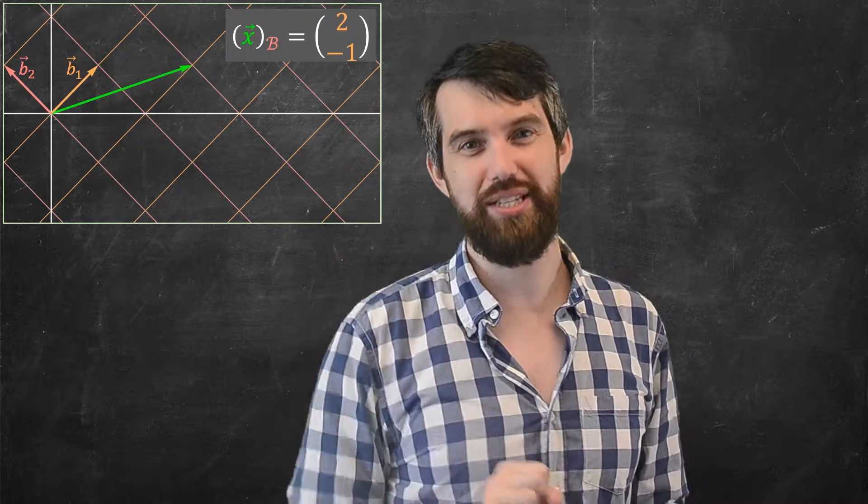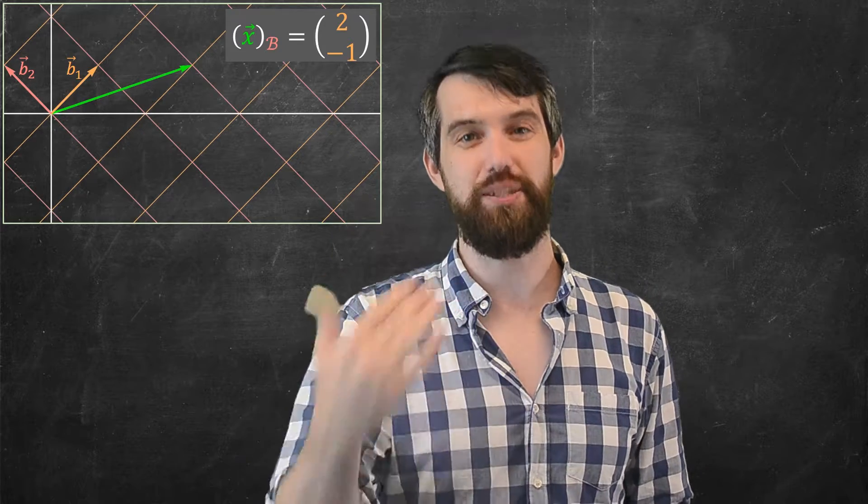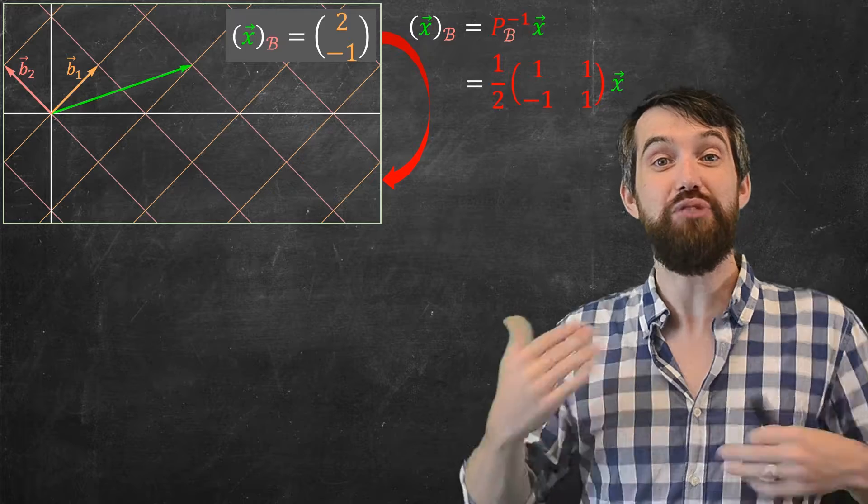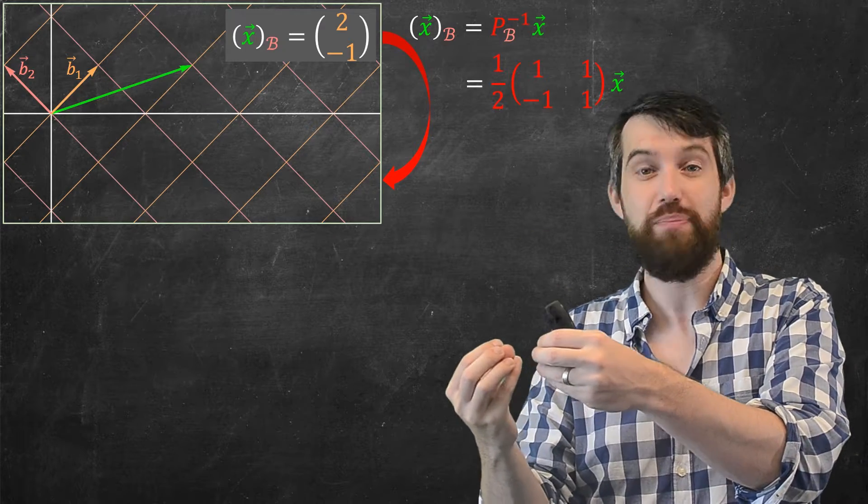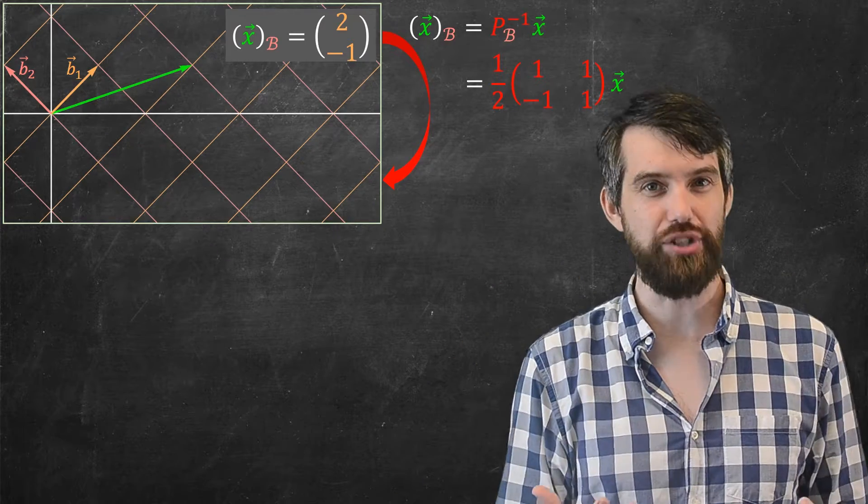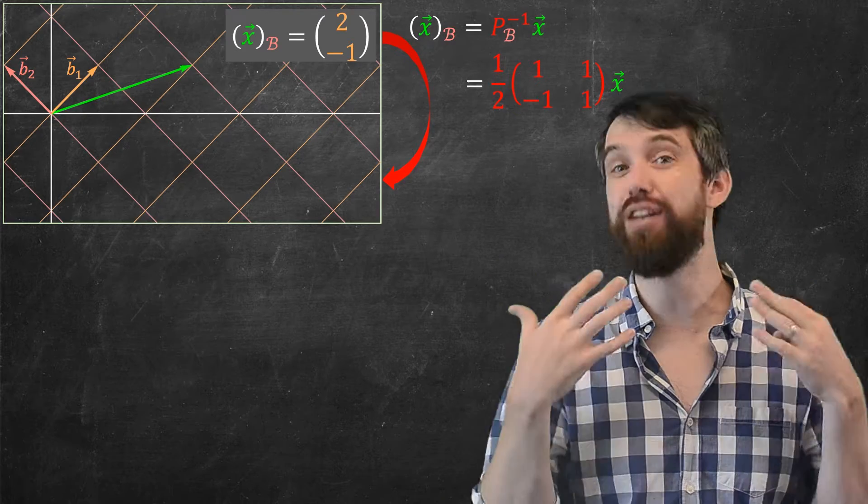My second question is this. We've seen previously that we have these change of basis matrices. For example, we've seen that we can apply some matrix that takes the vector x, multiplies this by pb inverse, and takes it to x in the b basis. Now, this is just a transformation. What exactly does that transformation do? How do I visualize that transformation?